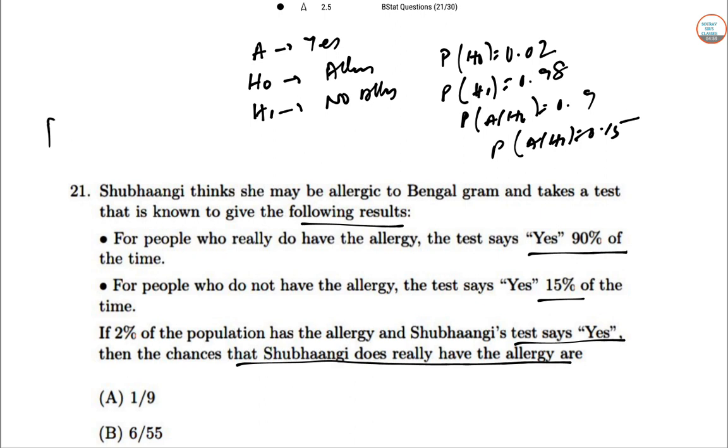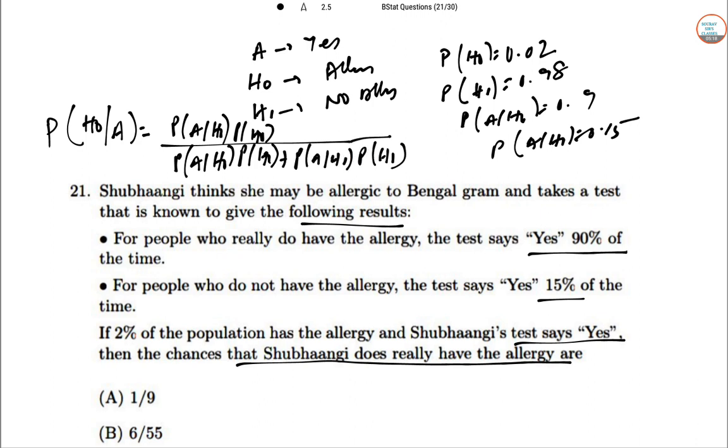By Bayes rule we need to find P(H₀|A). So P(A|H₀) × P(H₀) divided by [P(A|H₀) × P(H₀) + P(A|H₁) × P(H₁)].